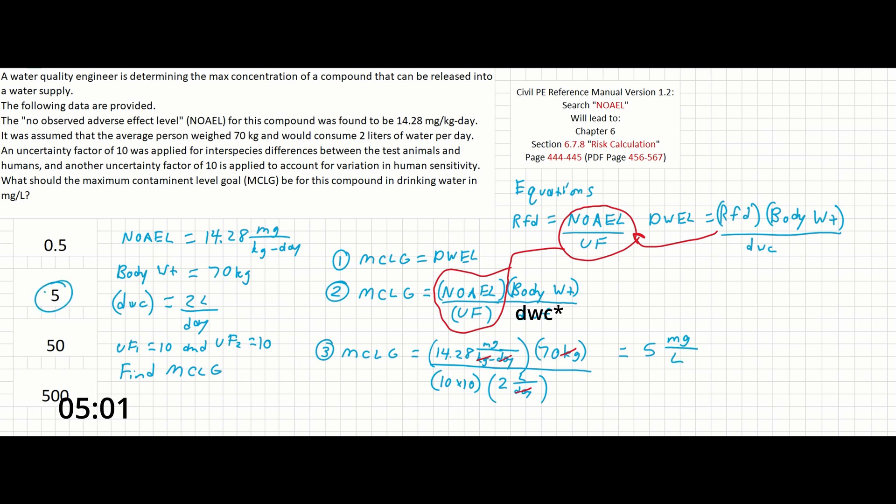So this problem is actually very easy to solve if you know a few things. One, you need to know where your equations come from in the manual. Two, you need to recognize that the MCLG equals the DWEL. And three, you need to understand how to manipulate the equation for reference dose to go into the equation for DWEL.